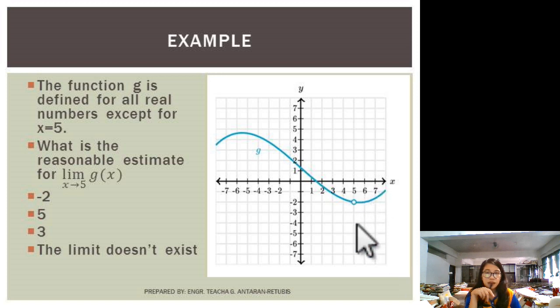at x equals 5, there's a hole, right? A hollowed hole, which means that at that, or that value there, it's not included in the domain. Okay? Now the question is, what is the reasonable estimate for limit of g of x as x approaches positive 5? Okay.